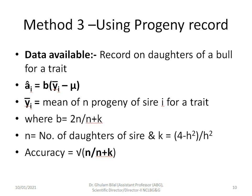Method 3 is very well known in the dairy cattle industry: we use progeny records to predict the breeding value of a bull. Since a bull has no record for milk yield, we predict his breeding value from his daughters' performance. Here ȳ_i is the mean of N progeny of bull i for the trait. B = 2N / (N + k), where N is the number of daughters of the sire and k = (4 − h²) / h². Accuracy = √(N / (N + k)).